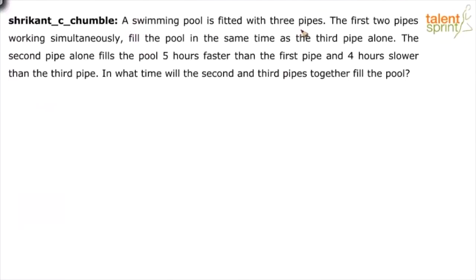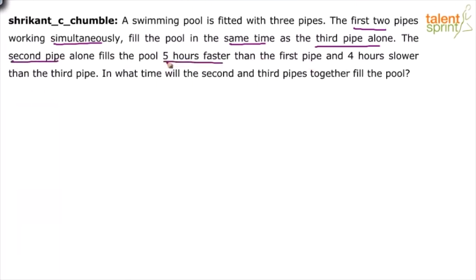A swimming pool is fitted with three pipes. The first two pipes working simultaneously fill the pool in the same time as the third pipe alone. The second pipe alone fills the pool five hours faster than the first pipe, and four hours slower than the third pipe. The question asks: in what time will the second and third pipes together fill the pool?